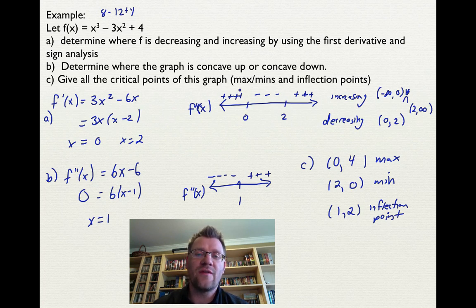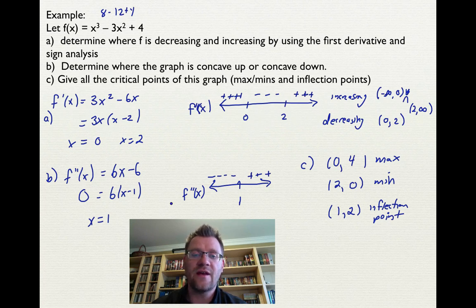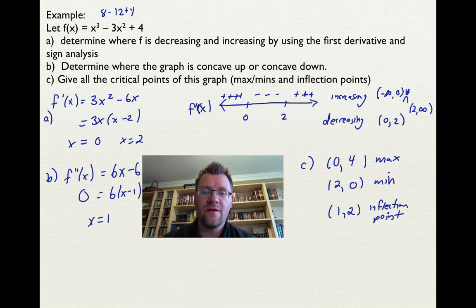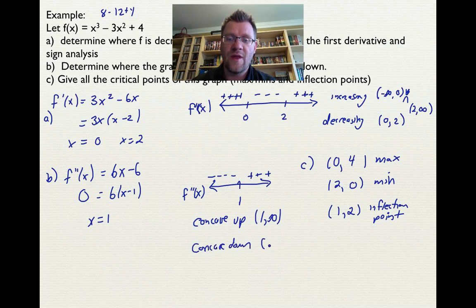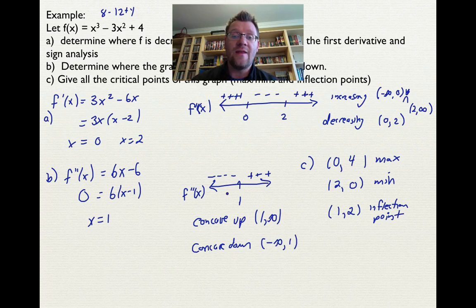Remember: the first derivative tells you where the function is increasing and decreasing, and those x values are your maxima or minima. The second derivative tells you where the function is concave up and concave down. So we should state: the function is concave up from 1 to infinity, and concave down from negative infinity to 1. Setting the second derivative equal to zero locates the inflection point.